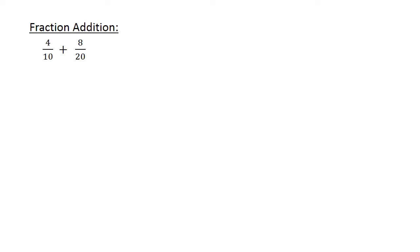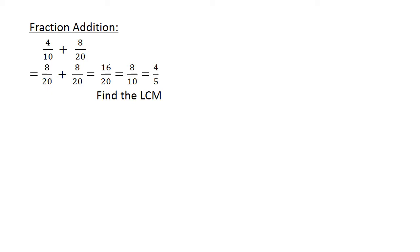Fraction Addition: 4 over 10 plus 8 over 20. Find the lowest common multiple. 4 over 10 equals 8 over 20, so 8 over 20 plus 8 over 20 equals 16 over 20, which equals 8 over 10, which equals 4 over 5.